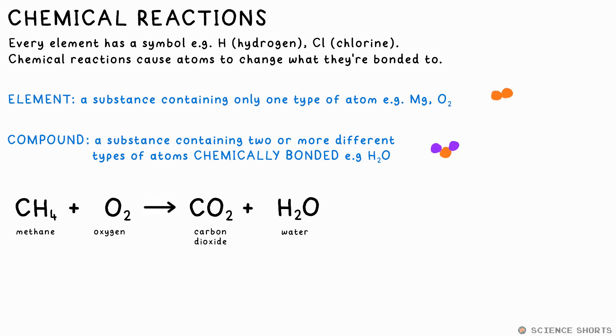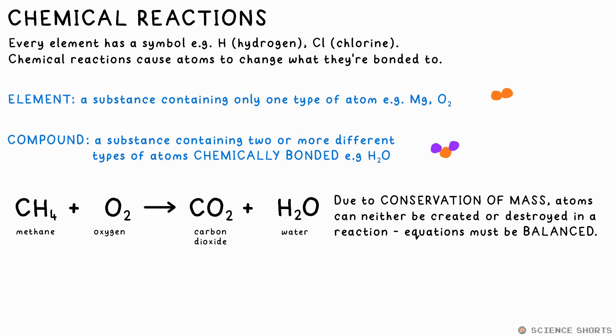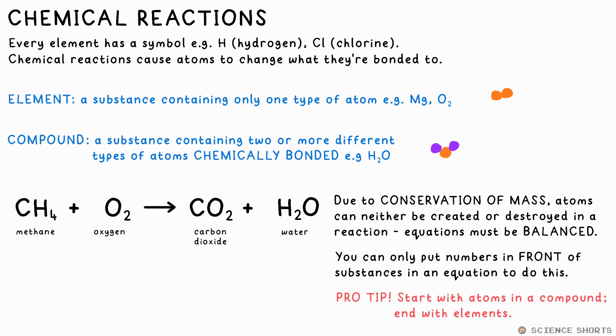We can represent a reaction with a word equation or a chemical equation using symbols. As atoms are not created or destroyed in a chemical reaction, there must be the same number of each type of atom on both sides, so sometimes we have to balance equations. Pro tip, start balancing atoms that are only in compounds.